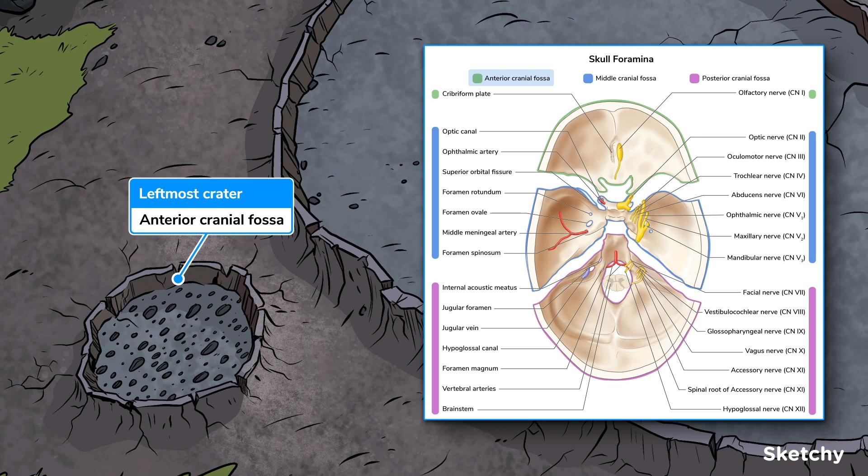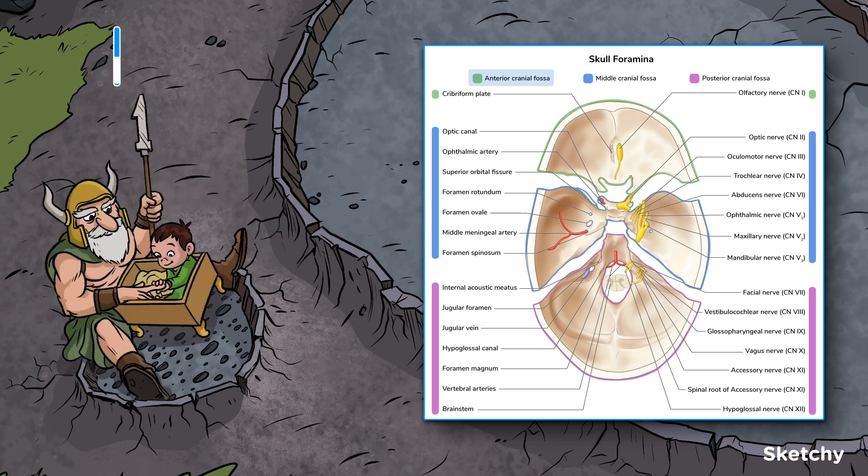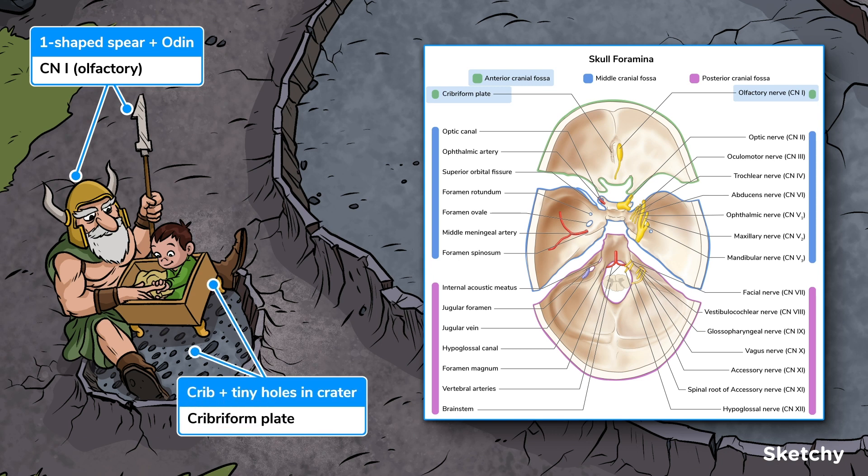The anterior fossa contains the cribriform plate, which transmits cranial nerve 1. So here we have Odin with his huge schnoz to remind you of the olfactory nerve. That's CN1, as you can probably tell by his one-shaped spear. The cribriform plate can be remembered by this crib and the tiny holes in the crater.